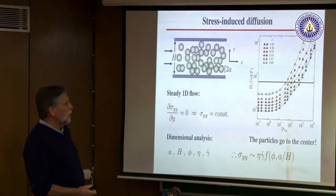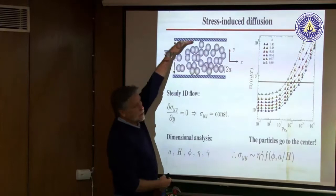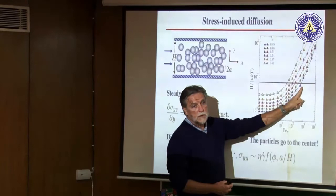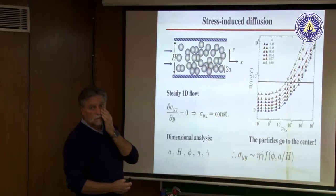To model this without doing simulations — the stress is constant in the y direction. This is stress as a function of shear rate for different concentrations. We walk along a constant line: if the shear rate varies, then the concentration has to vary to keep the stress constant. The remaining question concerns what happens at points where the shear rate is zero.